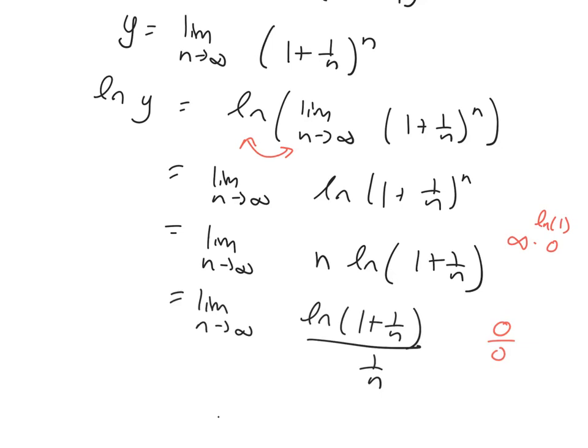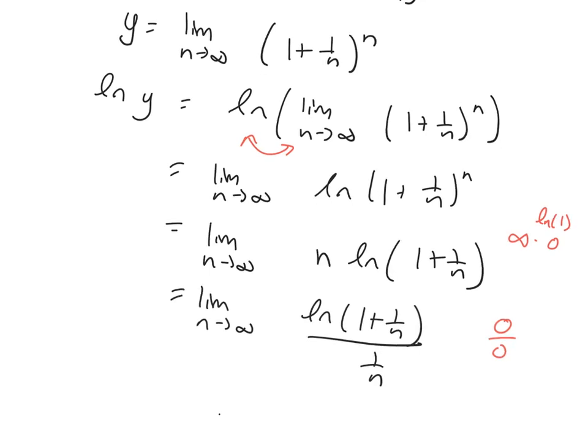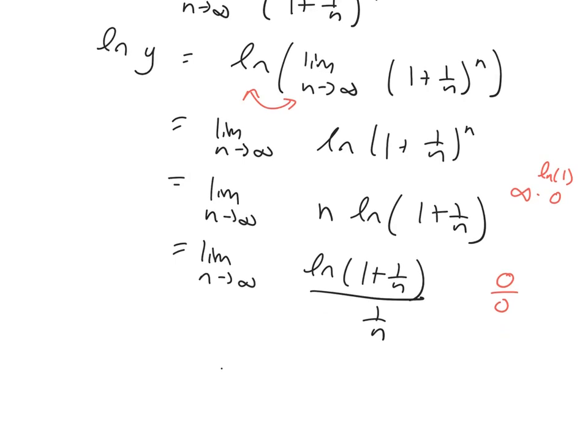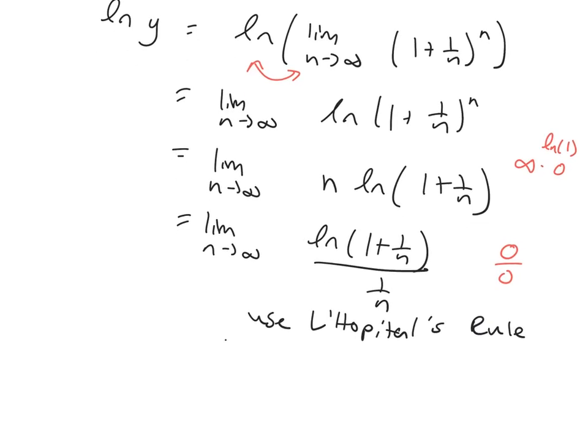So I'm running a little short on time. So I'm just going to tell you that I use L'Hopital's rule. And when you do, you're going to get 1 for this limit. So you're going to get ln of Y is 1.